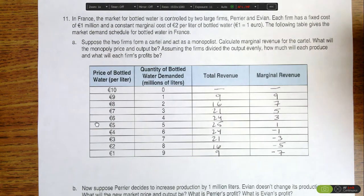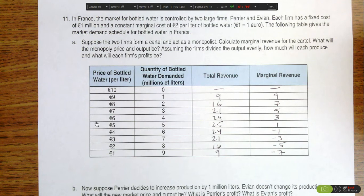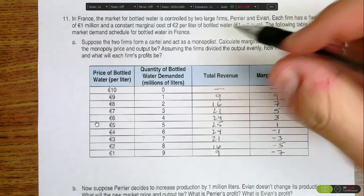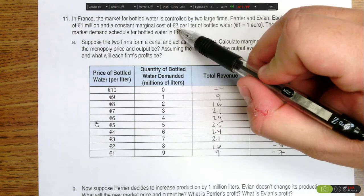In order to figure out the equilibrium price and quantity, we need to find where marginal revenue equals marginal cost, or the last point at which marginal revenue is greater than marginal cost. We see the marginal cost is 2 euros per liter.